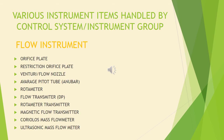Different types of flow instruments are used in industries as per process requirements. Selection depends on factors like accuracy, repeatability, and cost. Types include orifice plate, restriction orifice plate, Venturi/flow nozzle, averaging pitot tube (annubar), rotameter, DP type flow transmitter, rotameter transmitter, magnetic flow transmitter, Coriolis mass flow meter, and ultrasonic mass flow meter.